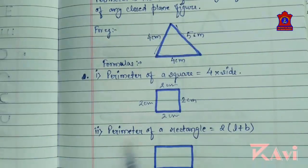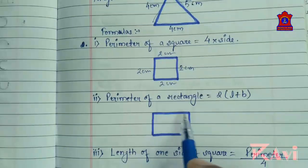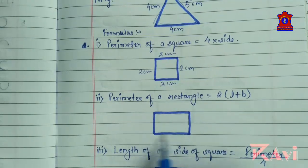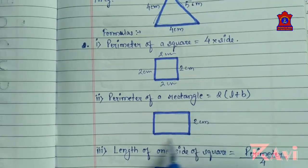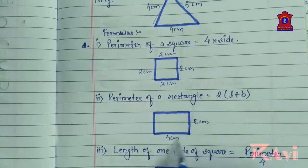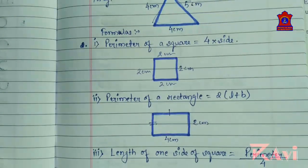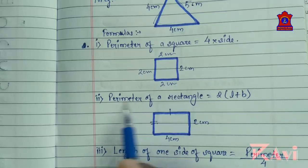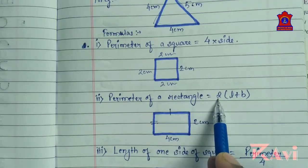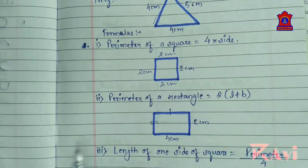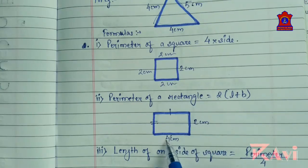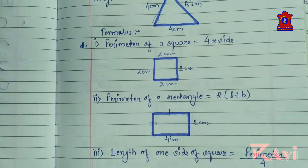Next, perimeter of a rectangle. This is a rectangle. If this side is 2 cm, then the opposite side is also 2 cm. If this side is 4 cm, the opposite side is also 4 cm. The formula is: perimeter of rectangle equals 2 into length plus breadth. For example, 4 plus 2 is 6, multiplied by 2 gives 12. So 12 cm is the perimeter of this rectangle. You should know these formulas.